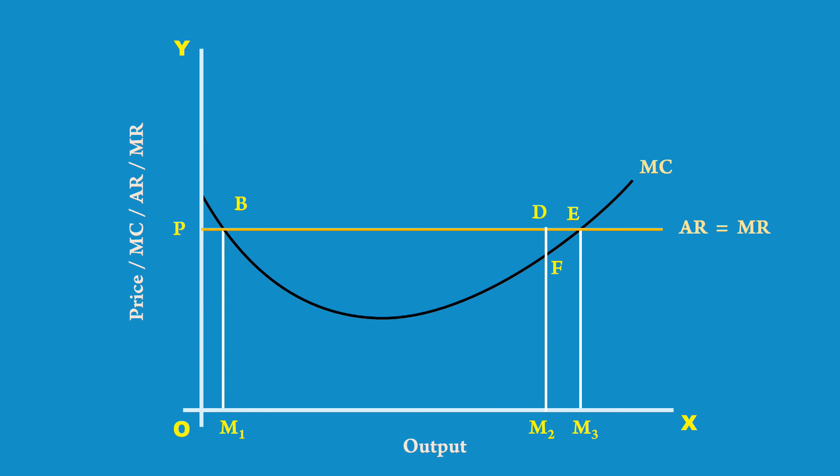There is scope for him to maximize his profit by expanding the output. Suppose he produces M4 units. Marginal cost is M4G. Marginal revenue is M4H. His marginal cost is greater than marginal revenue. His profit will be reduced by GHE.